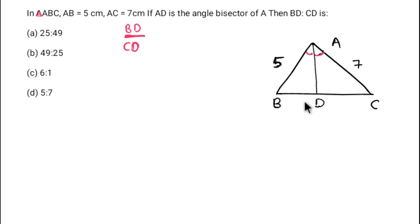There's a property: when an angle bisector from a vertex intersects the opposite side, it divides that opposite side in the ratio of the other two sides. So BD by CD is equal to AB by AC. This ratio BD over CD equals the ratio of the corresponding sides.